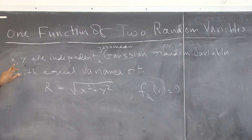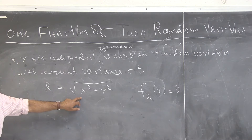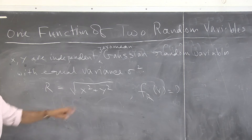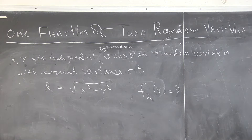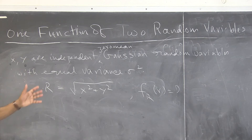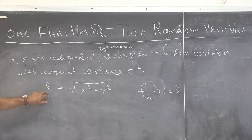For example, if you take x and y to be the in-phase and quadrature phase components of a complex random variable — consider x plus j*y — then the square root of x squared plus y squared represents the magnitude. So we are finding the density function of the magnitude, or amplitude, of a complex Gaussian random variable with zero mean and equal variance.